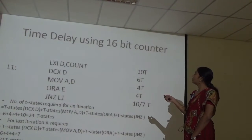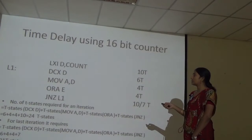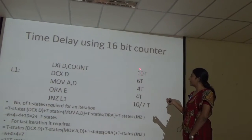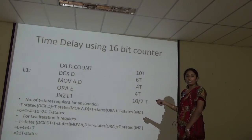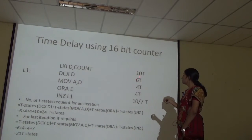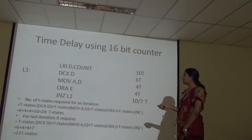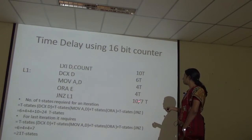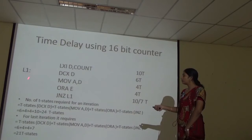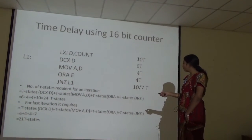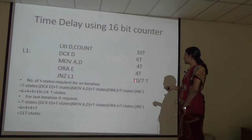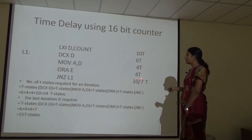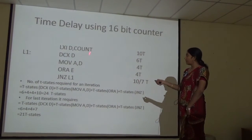Next we use a 16-bit counter. The instructions are: LXI D, count (10 T states); DCX D — which decrements the DE register pair (6 T states); MOV A, D (4 T states); ORA E (4 T states); and JNZ loop1 (10 T states when condition is true, 7 T states when false, exiting the loop). When the condition is true the loop repeats; when false it goes to the next instruction.